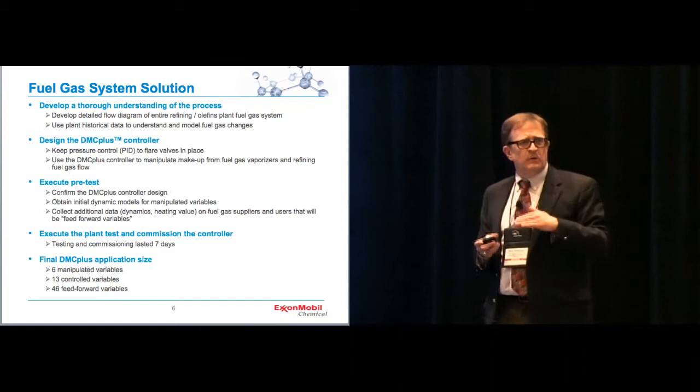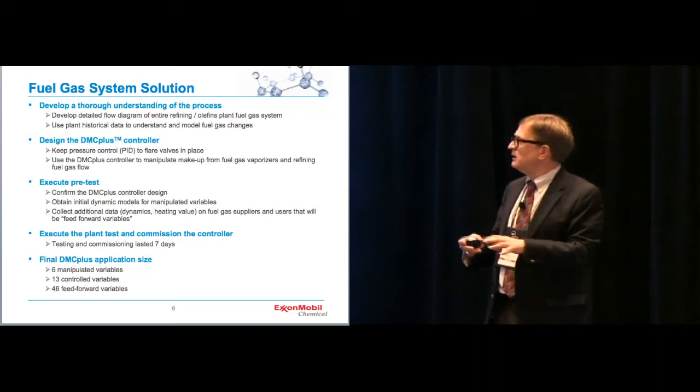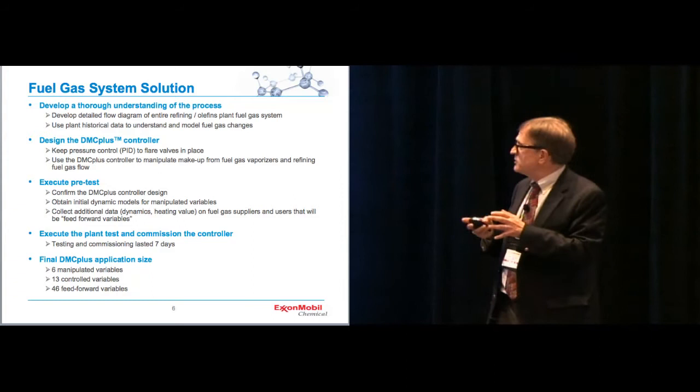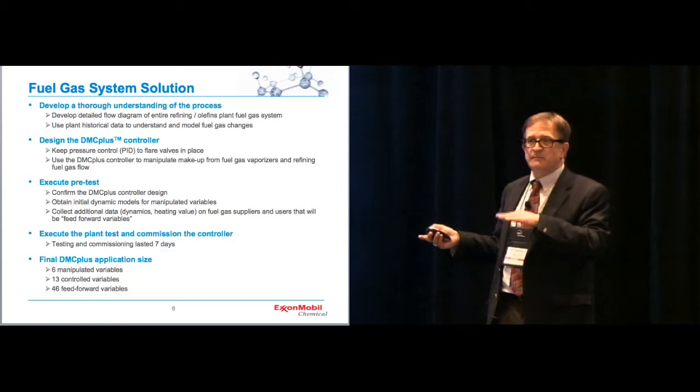Essentially, we decided, with a lot of help from the site, that said, hey, don't mess with those reliefs going into the flare system. We want to leave those in place. So we said, okay, we'll do that. But we'll go ahead and control the makeup, and we used DMC Plus to actually manipulate the vaporizers, plus also that refining stream that's coming in. So those are our things that we move with the DMC Plus controller. We then, in the typical mode of doing a model predictive control, you do your design, you do a pre-test, which you go to the site, you make manual moves. In this case, we test that design to make sure we got the right design in place. We look for all the additional potential disturbance variables, or feed-forward variables, as we call it, and we're checking those as well.